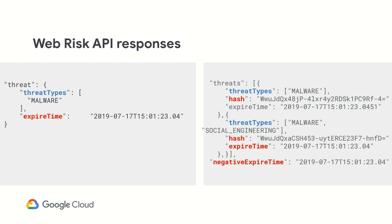The expire time will denote the time for which our terms encourage you to consider the URLs unsafe. And the negative expire time is the time which we discourage you from making another call because it's unlikely a verdict will change, even if there is no verdict. So consider it like: don't ask again for a little bit.